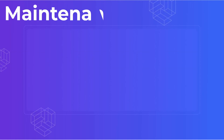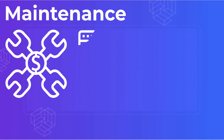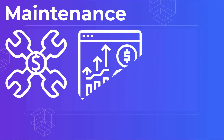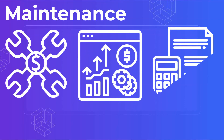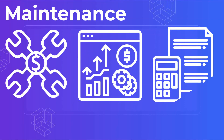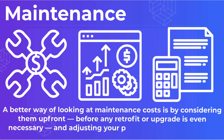Maintenance. All projects have some sort of ongoing support or maintenance cost. They often show up in bug fix patches or in enhancements added after the initial release. A better way of looking at maintenance costs is by considering them up front, before any retrofit or upgrade is even necessary, and adjusting your project budget accordingly.